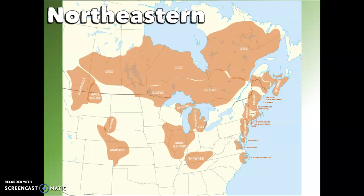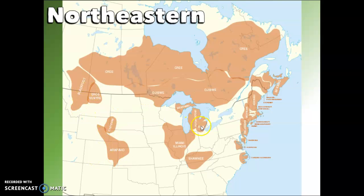This is a picture of where those northeastern tribes were located. You might recognize some names like the Cree, up more in Canada, the Miami and Illinois — that is where we get the name for Illinois — Pottawatomie, Arapaho, Cheyenne, Blackfoot in Montana. Lots of names you might know. There is Delaware over here — that is where we get the name for the Delaware state.